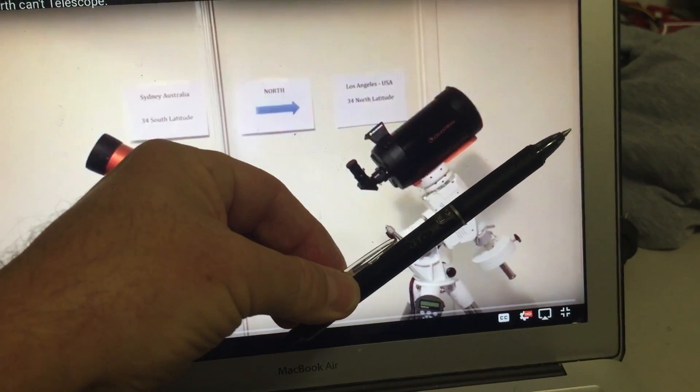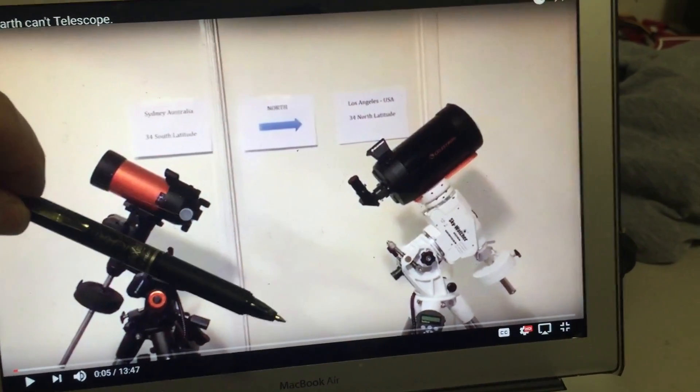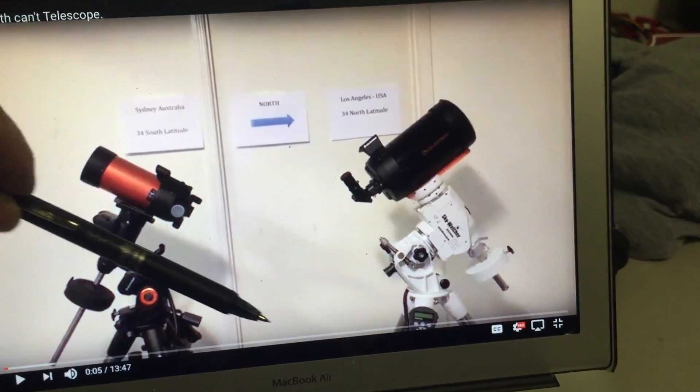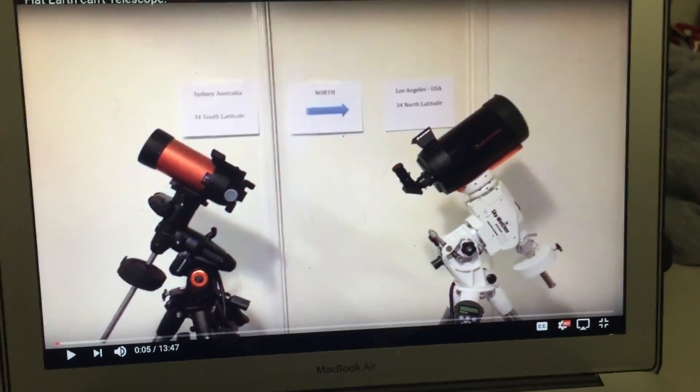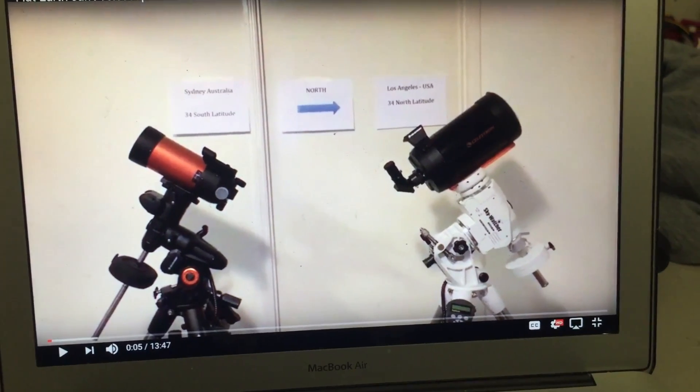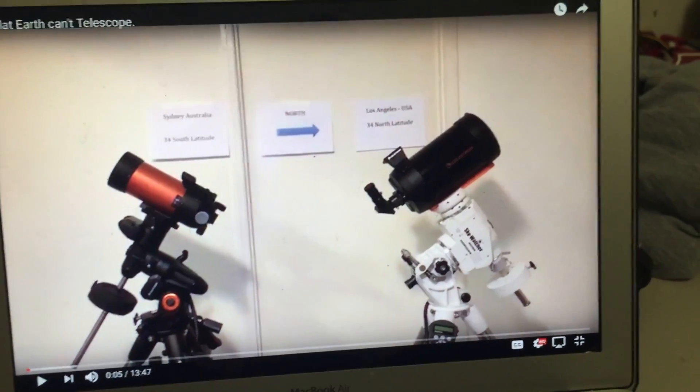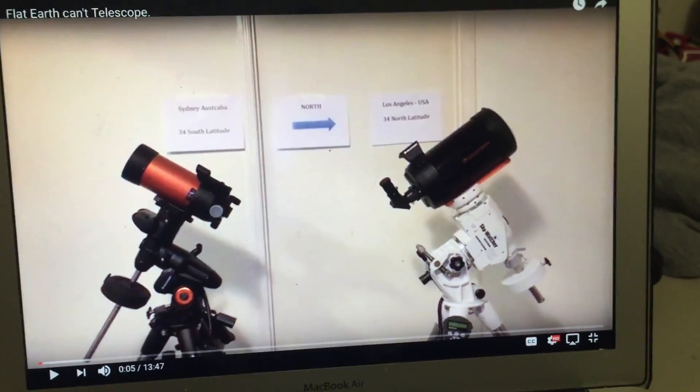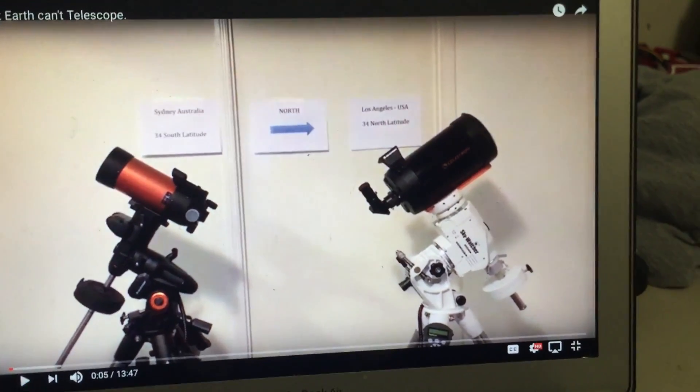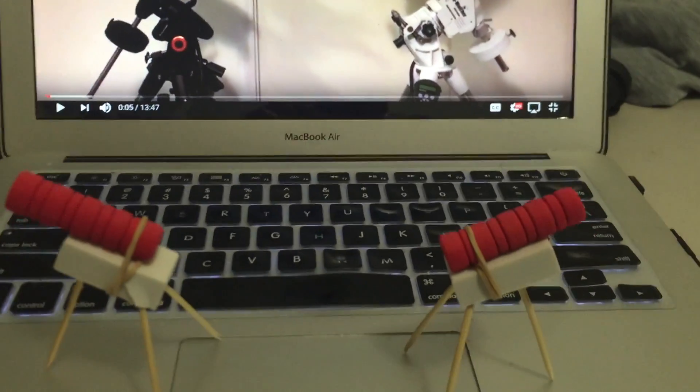So this is the polar axis on the right telescope. This is the polar axis on the left telescope. They are not aligned. Now the point is that in reality when these telescopes are set up at their respective locations, those axes will be aligned and I'm just going to demonstrate how that occurs.